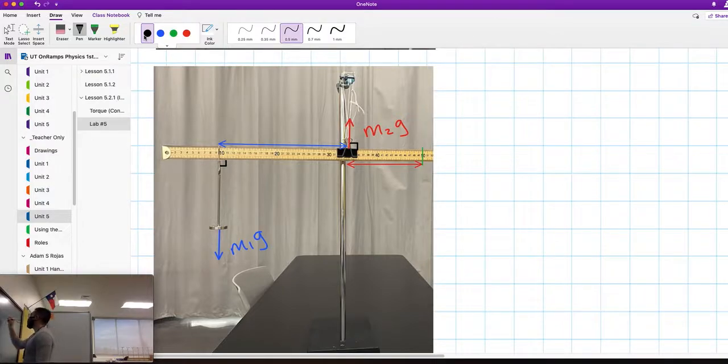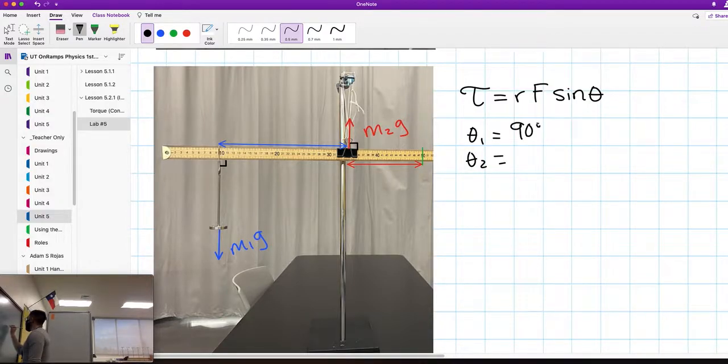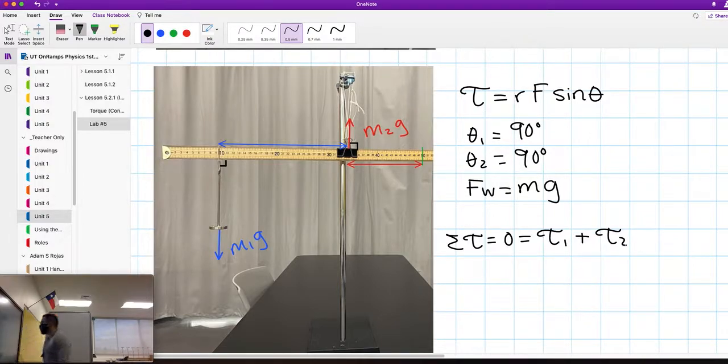Let's recall the equation for torque. Torque equals R force sine of theta. Theta one and theta two will both be 90 degrees. When that's the case, the sine of 90 degrees is 1, meaning we don't have to use that term for our equation. The force of weight equals mass times acceleration due to gravity. Therefore, if we say the summation of the torques equals zero, that should be torque 1 plus torque 2. Since they're pointing in the opposite side, we can say torque 1 is equal to torque 2 so that the second condition of equilibrium is satisfied.